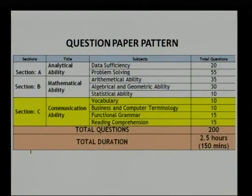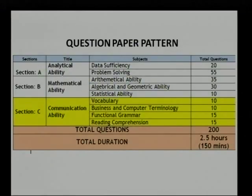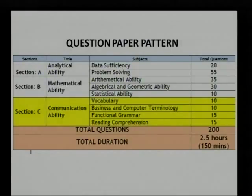Now let us talk about functional grammar. In order to understand its importance, we need to understand the AP ISET question paper pattern. There will be three sections: Section A for analytical ability, Section B for mathematical ability, and Section C for communication ability, which I am taking care of. In communication ability, the subjects are vocabulary, business and computer terminology, functional grammar, and reading comprehension. There will be a total of 200 questions to be answered in two and a half hours.